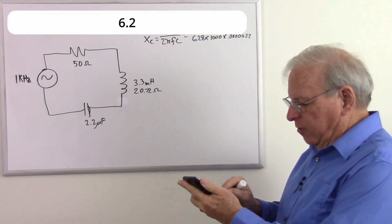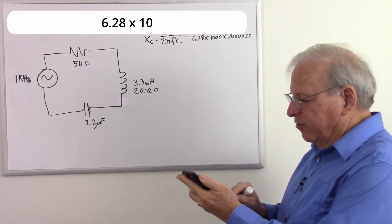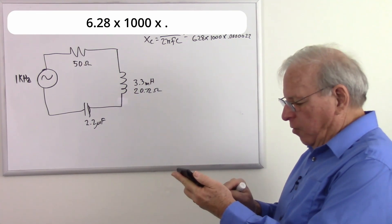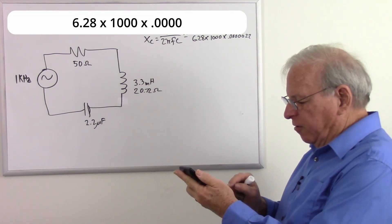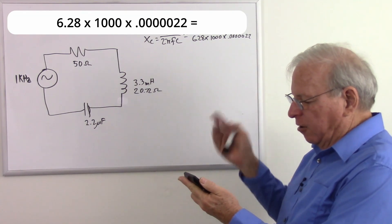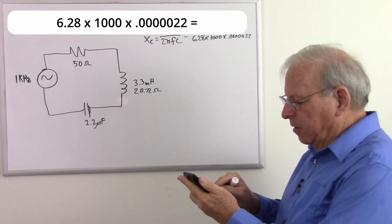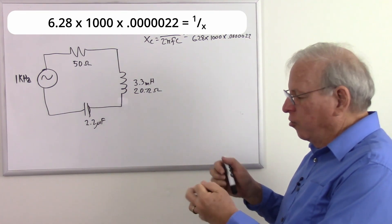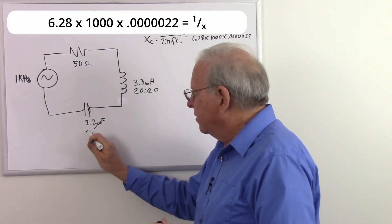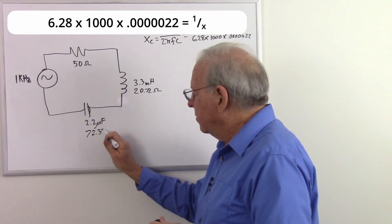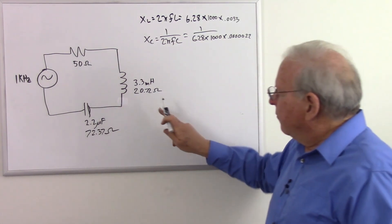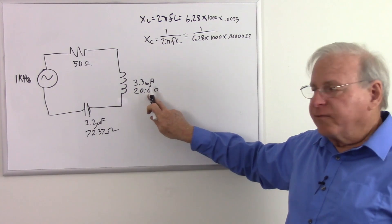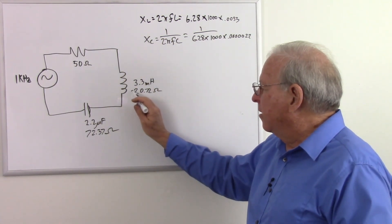6.28 times 1,000 times 0.000022 equals, I don't care about that number, I just take the reciprocal, and I got 72.37. So we have 20.72 ohms of inductive reactance, 72.37 ohms of capacitive reactance.